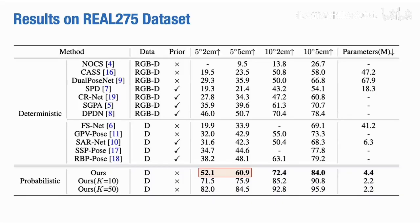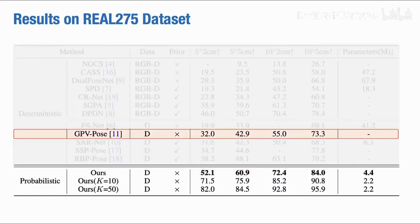In the rigorous evaluation metrics 5 degrees 2 cm and 5 degrees 5 cm, our method surpassed 50% and 60% respectively for the first time. Besides, compared with the method GPV pose with the same input data, our method exceeds it by nearly 20% in both rigorous metrics.